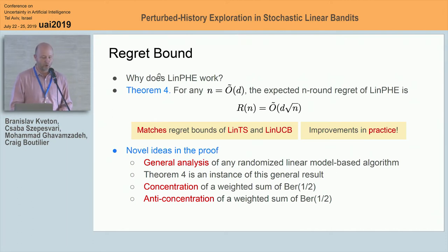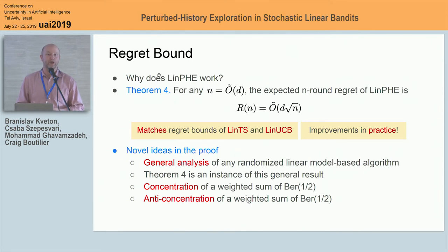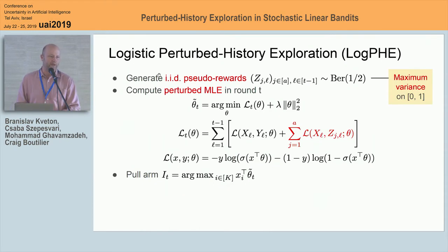There are several nice ideas in the proof. We provide a general analysis for any randomized linear model-based algorithm and instantiate our algorithm as a special case. To instantiate it, we need to characterize the behavior of the noise we add — specifically, concentration and anti-concentration of a weighted sum of Bernoulli random variables. Concentration is not hard since this is sub-Gaussian. Anti-concentration is much harder because the weighted sum of Bernoulli random variables doesn't have a closed form, so we relate the variance of the random variable to a lower bound on the tail of this variable.